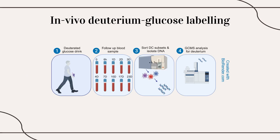To investigate the lifespan of blood CDC subsets during healthy homeostasis, we used the non-toxic stable isotope labeling approach, specifically by using deuterium-labeled glucose. Deuterium is a stable isotope of hydrogen, which can be stably incorporated into the backbone of DNA in dividing cells. Therefore, it acts like a birth certificate.